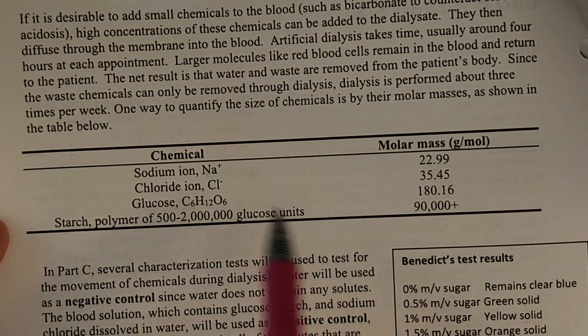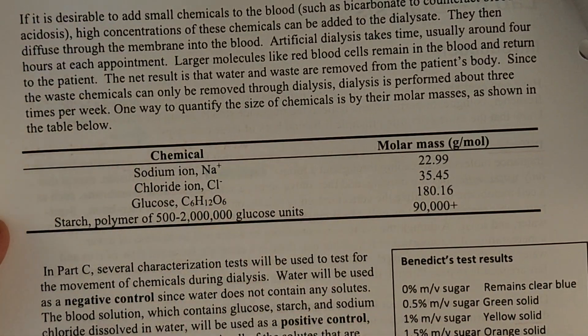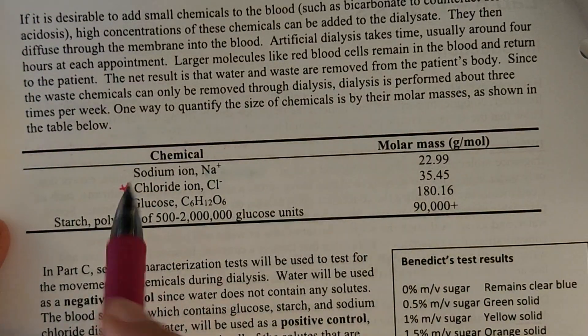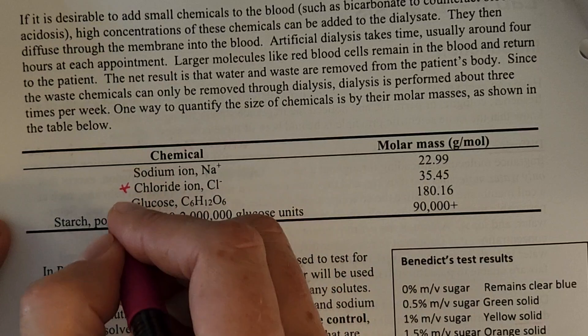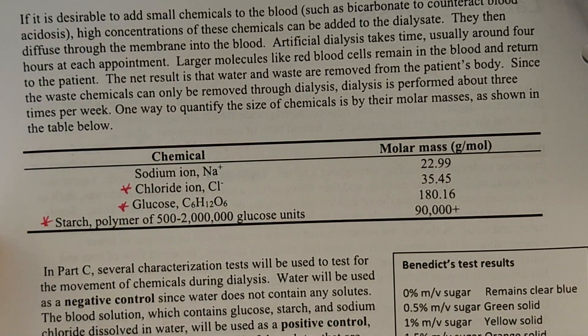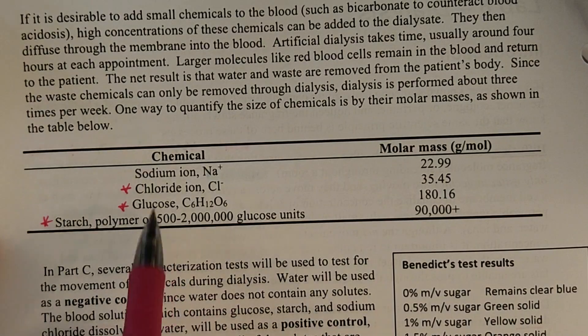So if we flip the page here, here are the solutes that we're going to be looking at today. And in particular, we're going to look at the ones that are easiest to characterize or see. So that's going to be chloride, glucose, and starch. We will not be looking at sodium, although we could make some inferences from our work about what sodium is doing.